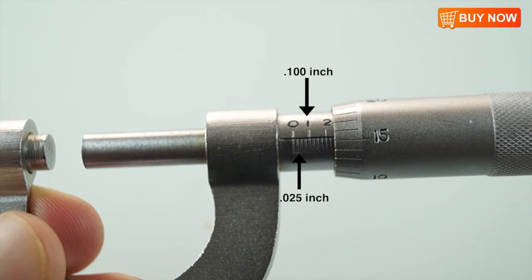On the thimble scale there are 25 measurements, each representing one one thousandth of an inch or point zero zero one.